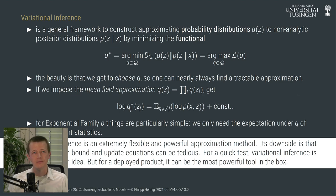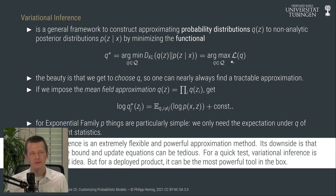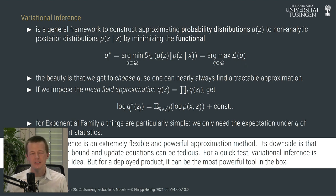Variational inference strikes a balance by providing an approximation based on an optimization framework that converges in finite time to a full probability distribution, which approximates the posterior globally — not just locally around the mode — by minimizing KL divergence. We achieve this not by explicitly minimizing KL divergence, but by maximizing the ELBO, the evidence lower bound, where the gap between this lower bound and the constant is given by the KL divergence.